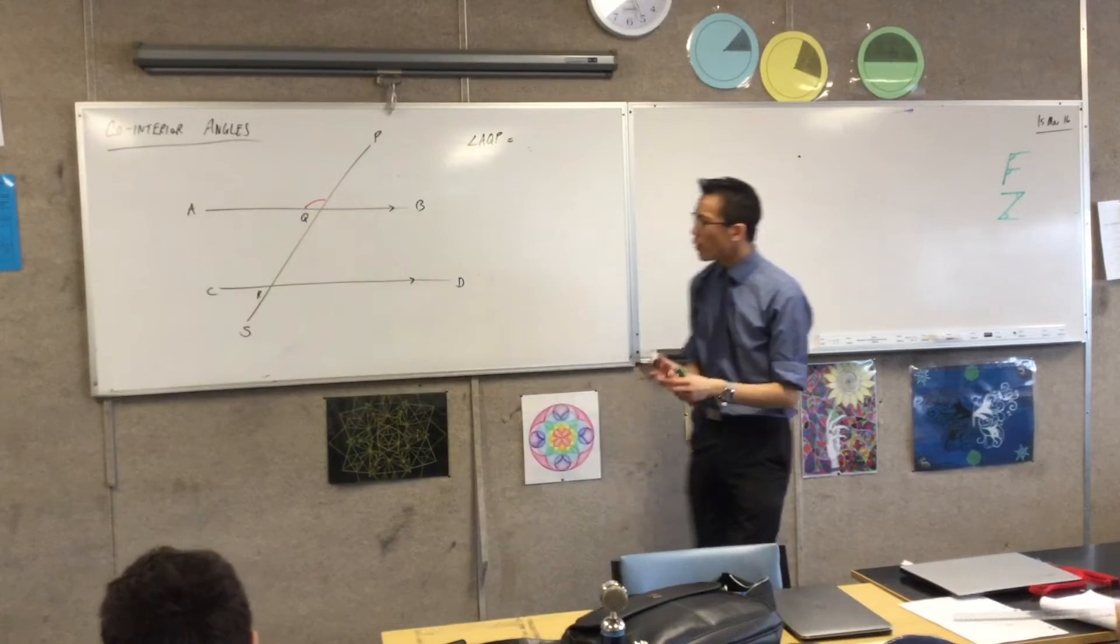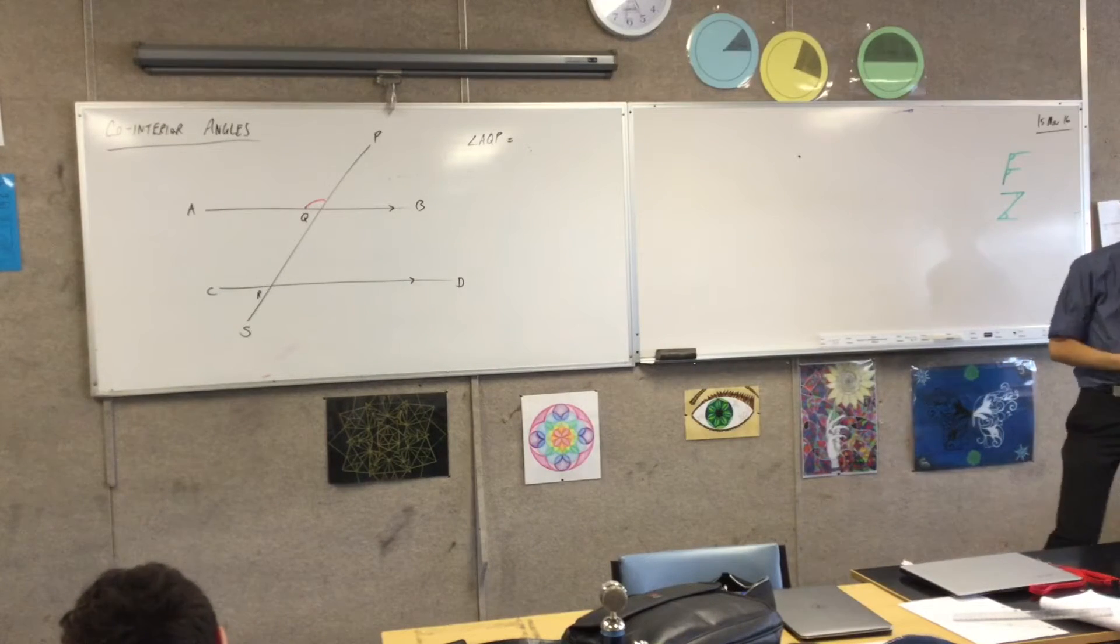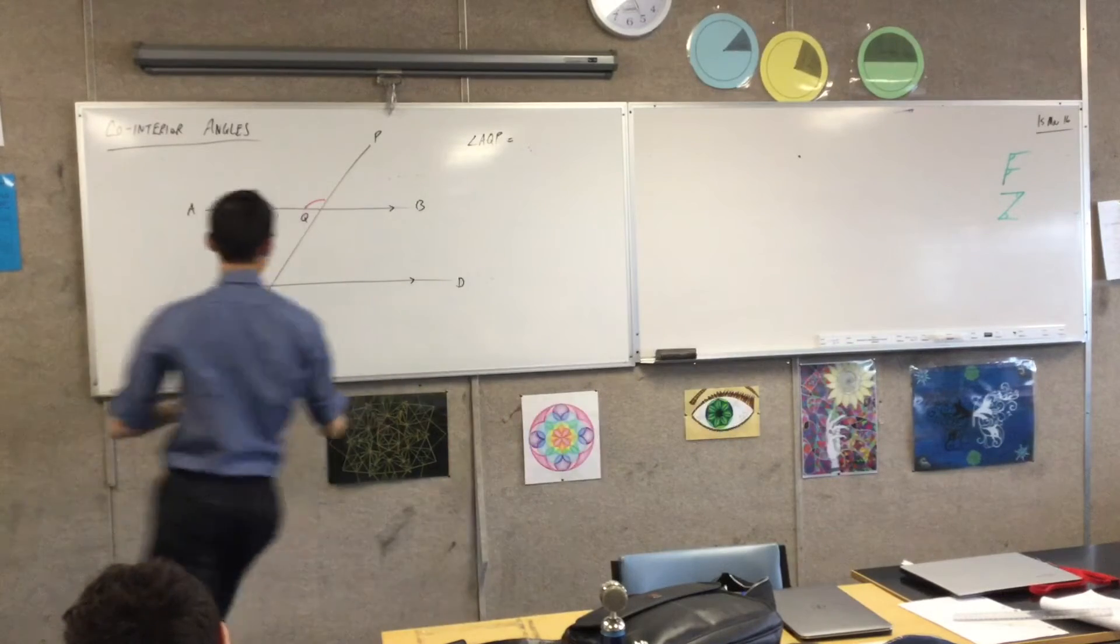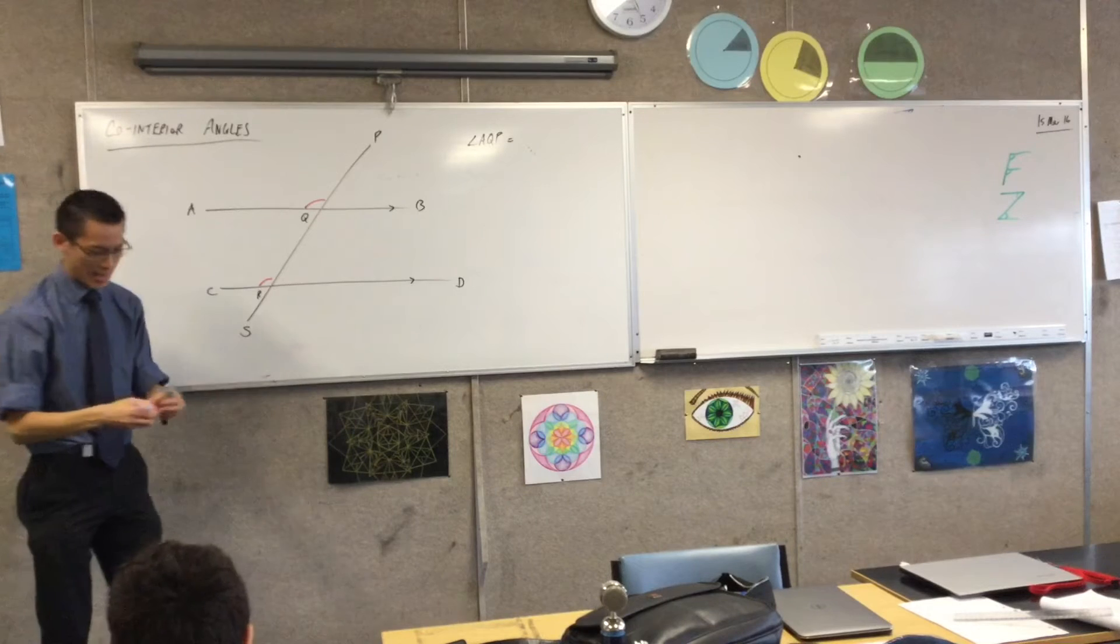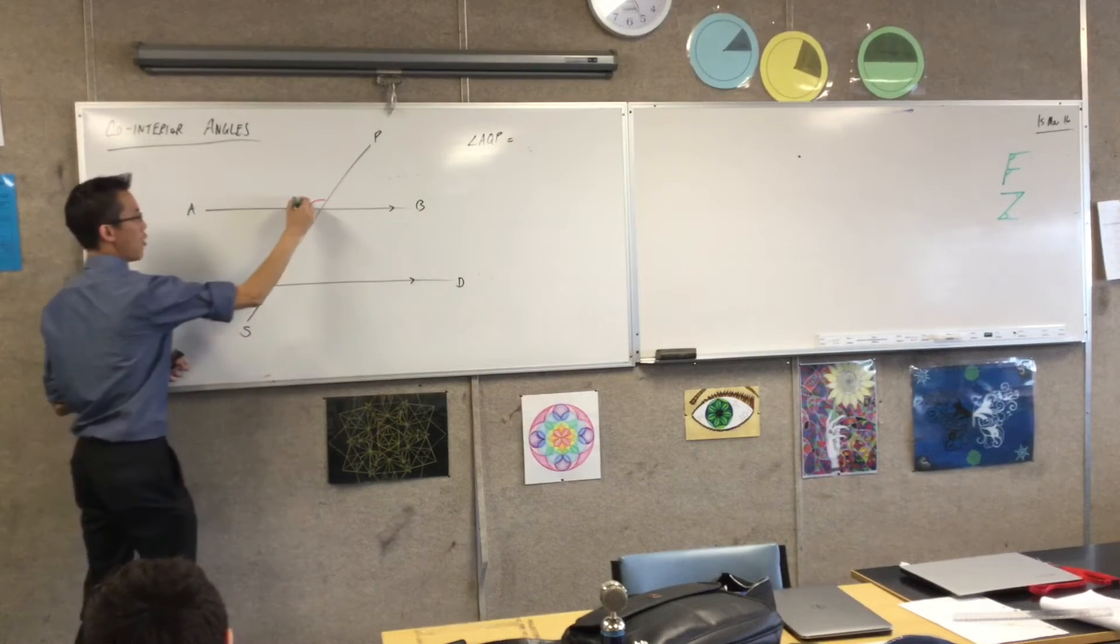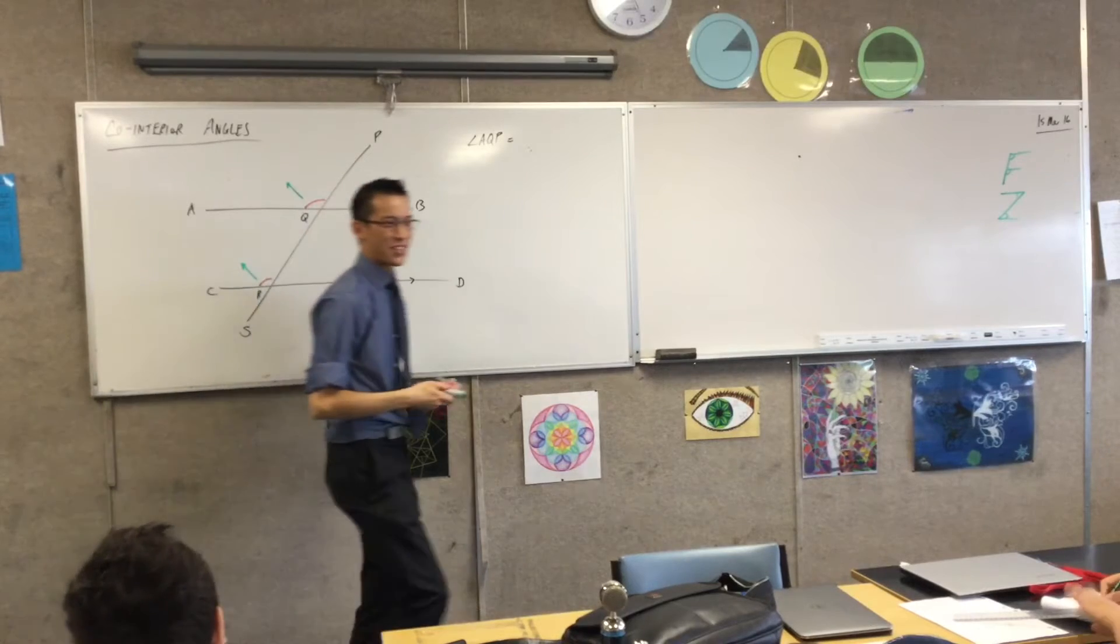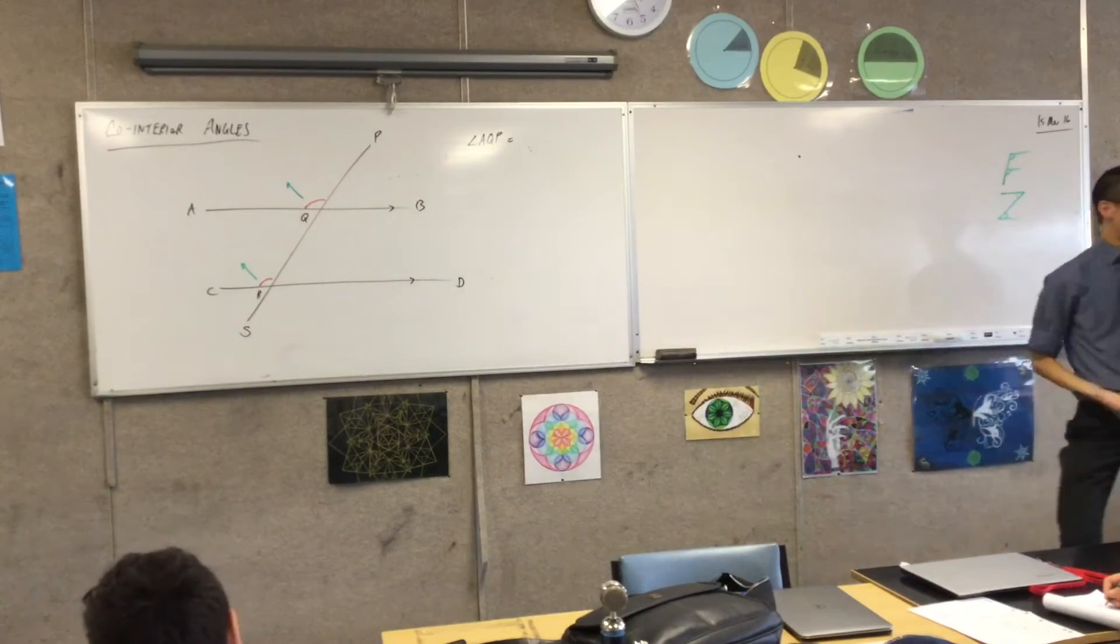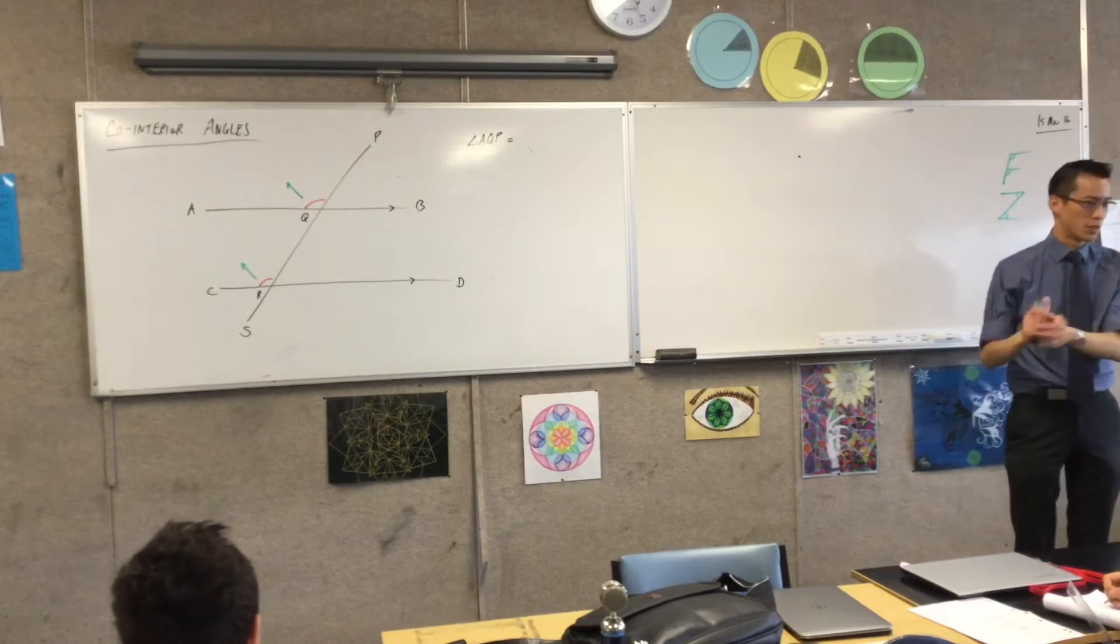Let's write that down together. Angle AQP. Okay. Now, which angle corresponds to AQP? Which is the corresponding angle to this one? Angle CRQ. CRQ. Perfect. There you go. And you can see, again, it's because they're facing in the same direction. One direction. I've been trying so hard all week to avoid saying that. They're facing in the same direction, so that's what makes them correspond. All good.